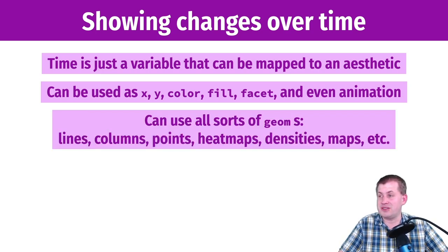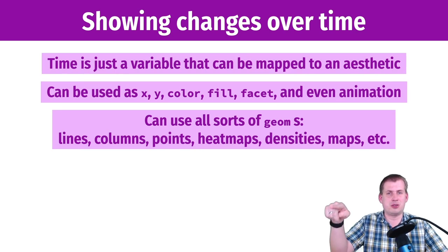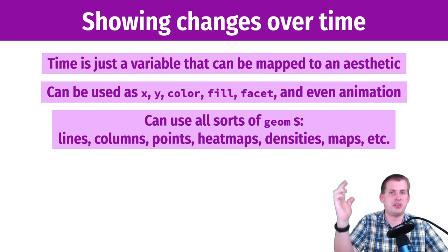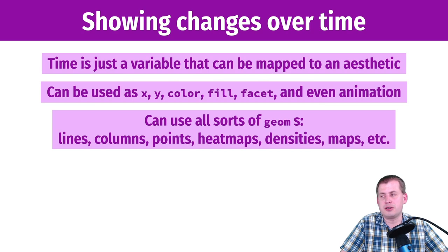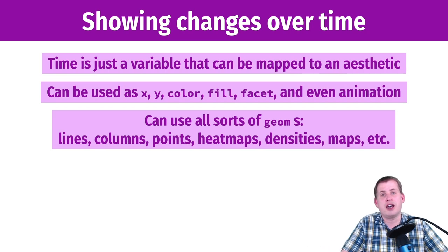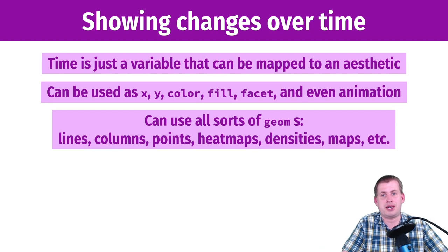You can use any sort of geom to show time. You can show lines — that's a standard way to show changes in different things over time. You can use columns, points, heat maps, density plots, geom ridges, maps, all sorts of things. As long as there's a time variable in there, you're visualizing time.